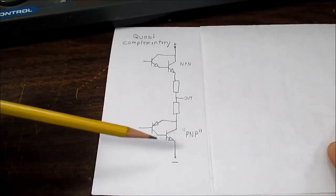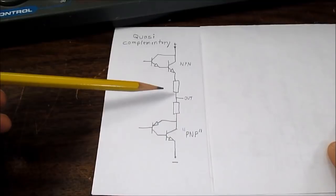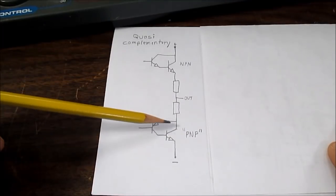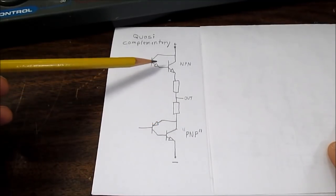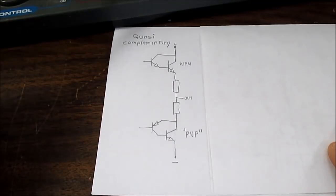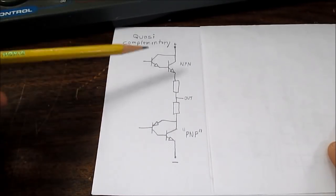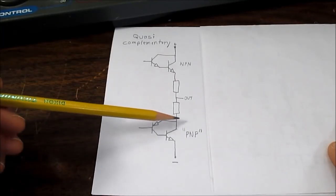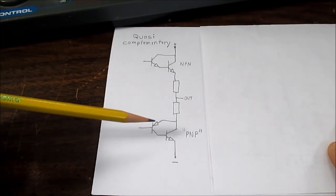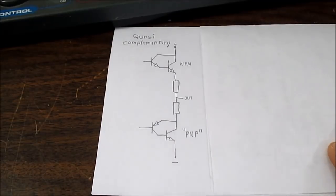However, early designs, this was not really that complementary to the upper stage, and it caused distortions and other issues. But the engineering kicked in, and they added resistors and diodes to the circuit, and they made it work pretty well. There were some pretty decent amps back in the day using the quasi-complementary design.